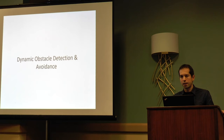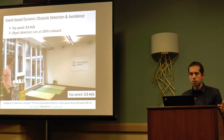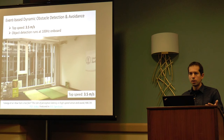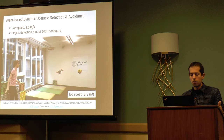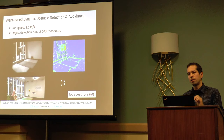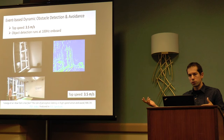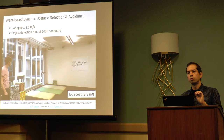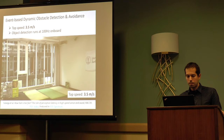Another recent result published at ICRA is an application to robotics for dynamic obstacle detection and avoidance. We are throwing balls at a quadrotor, and the quadrotor detects the ball and triggers an evasive maneuver based solely on the output of the event camera. In a paper called 'How Fast Is Too Fast?' we try to answer when an event camera has an advantage compared to a standard camera. We show that depending on the relative speed between objects thrown and the quadrotor and the field of view, an event camera can allow you to fly as twice as fast as with a standard camera.